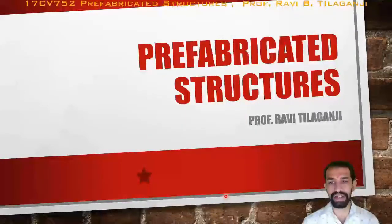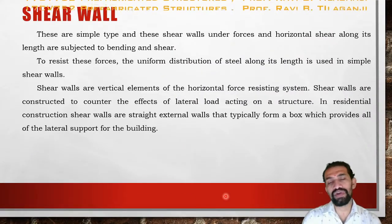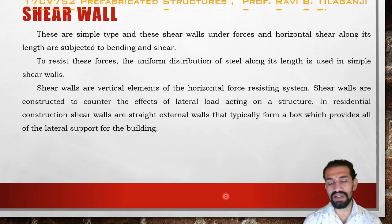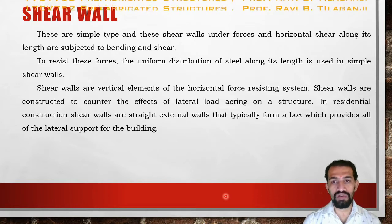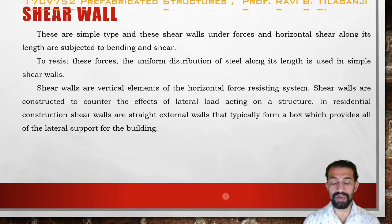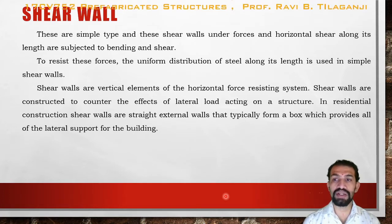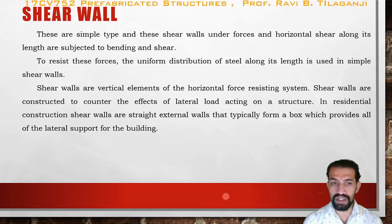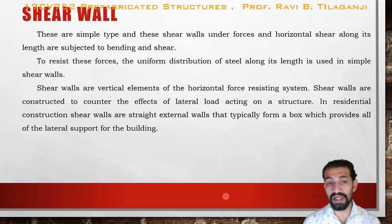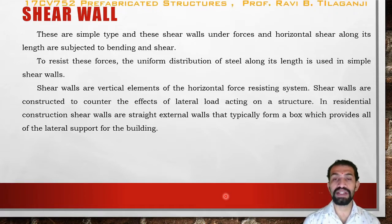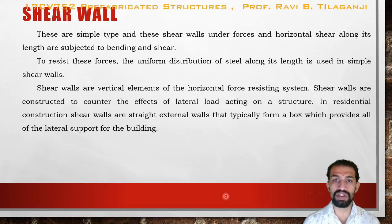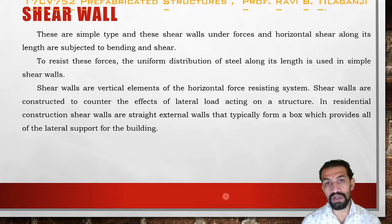Welcome to prefabricated structures. Today's video is related to a prefabricated component which is the shear wall. These are simple types of shear walls. Shear walls are under forces and horizontal shear along their length, subjected to bending and shear. To resist these forces, uniform distribution of steel along their length is used. Shear walls are vertical elements of the horizontal force resisting system, similar to walls, provided specifically for horizontal forces acting on them.